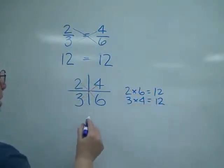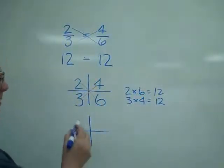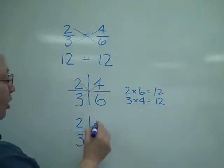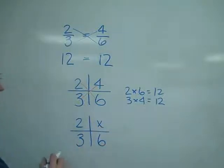Now, setting it up where sometimes I don't know all 4, in fact most of the time I'm not going to know all 4. So let's say I know the 2 and the 3, and I don't know what this number is, but I know the 6.